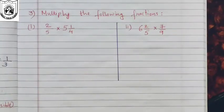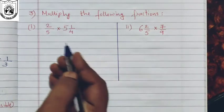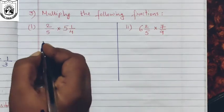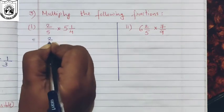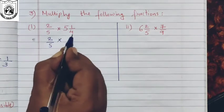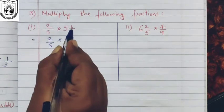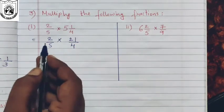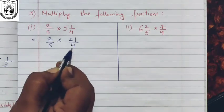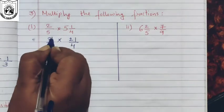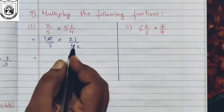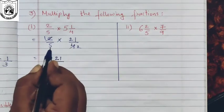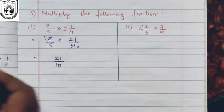Let us now solve the third question: multiply the following fractions. The first one we have two-fifth and then a mixed fraction. So let us convert: two-fifth multiplied by — four times five is twenty plus one — twenty-one upon four. Two and four can be cancelled, leaving twenty-one over ten.